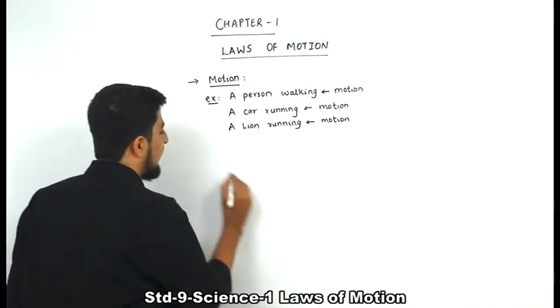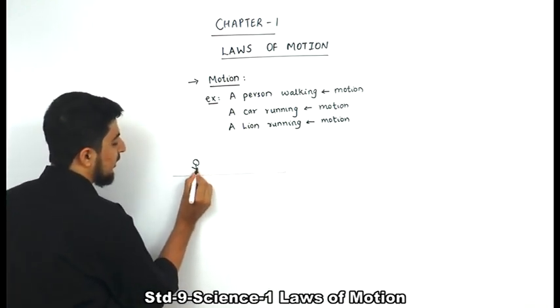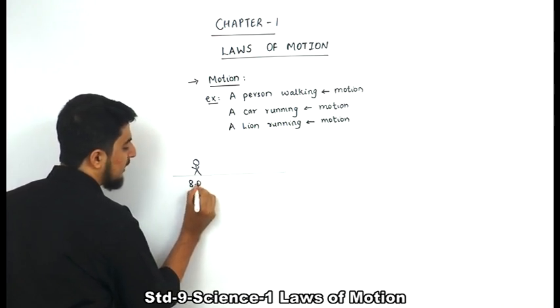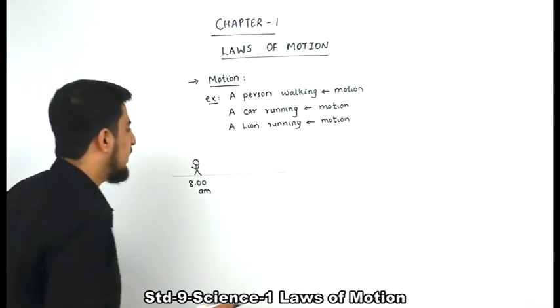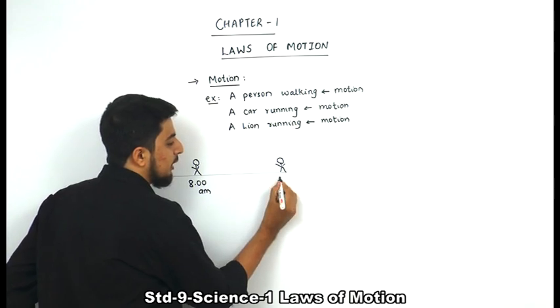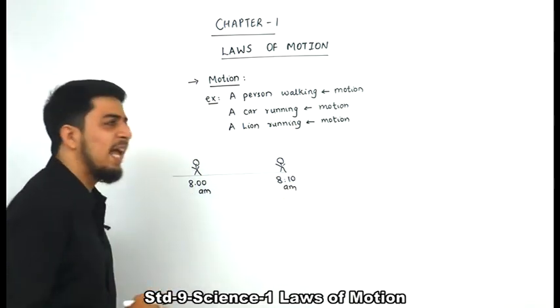For example, if a person is running - if this is the road, if a person is running, at let's say 8 am he is here and he is running the race. What has happened?